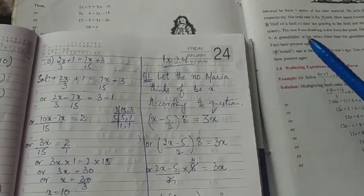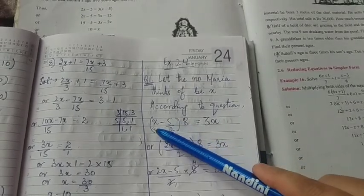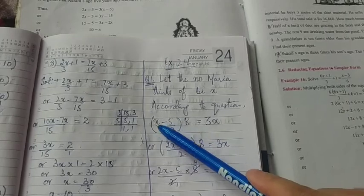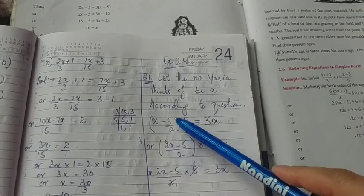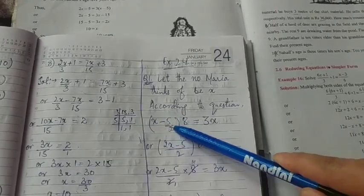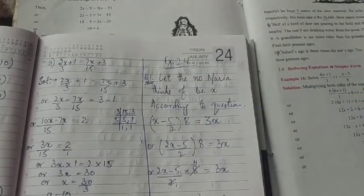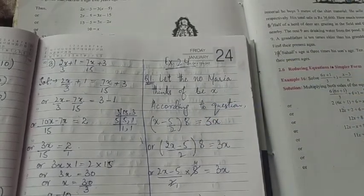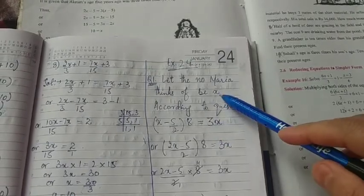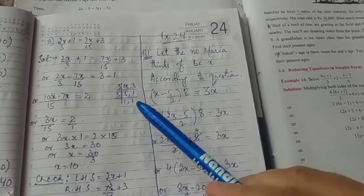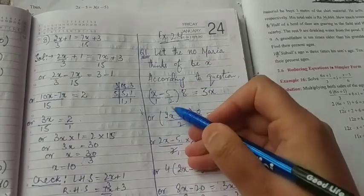The condition that the question has given us is that I have to subtract five by two from that number, that means five by two must be subtracted from x. So here it is: x minus five by two. Now it's also being said that we have to multiply their result by eight, so I am multiplying their result by eight. So what I will get? I will get a number which is three times the number she thought of, that means three into x, three x.